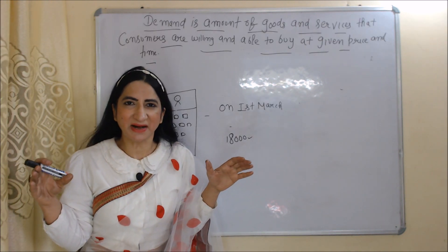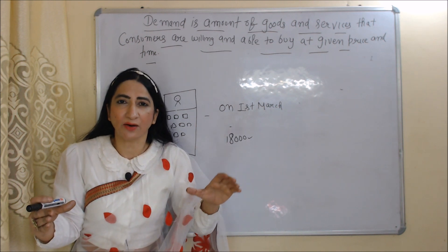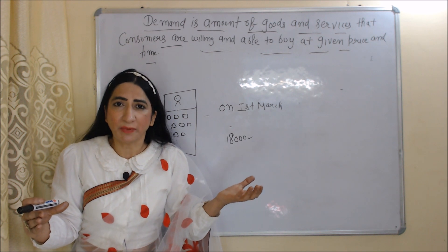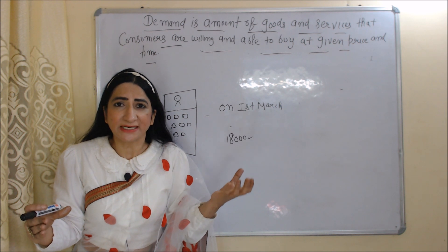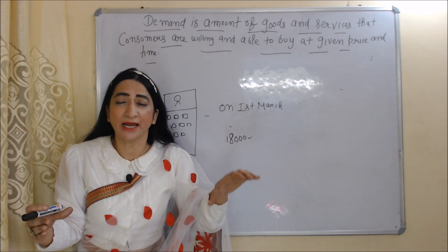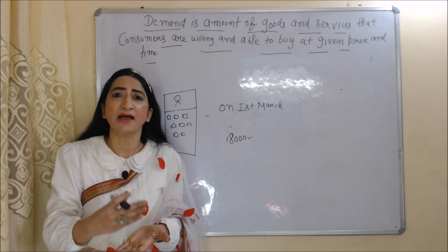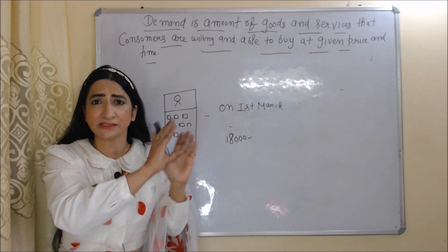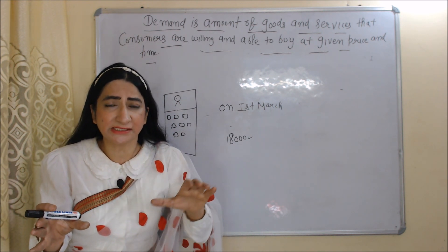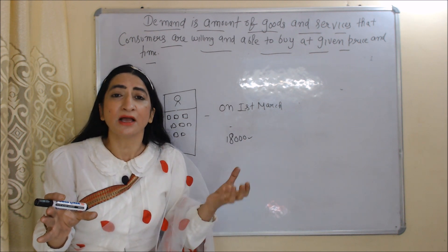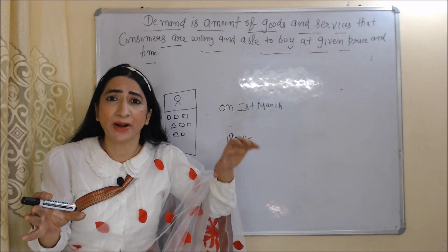So what is demand? Demand is the amount of goods and services that consumers are willing and able to buy at a given price and time. Able to buy means they have money to buy these goods and services. So demand is the amount of goods and services that consumers are willing and also have money to buy at a given price and time.